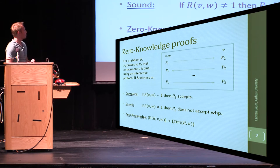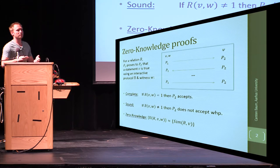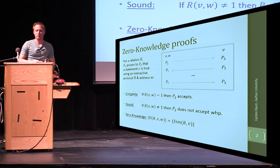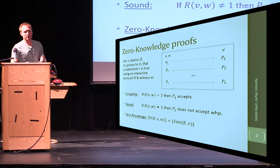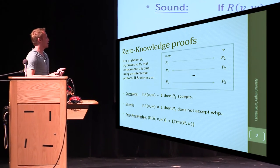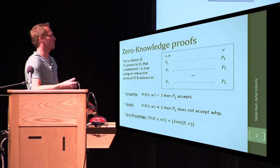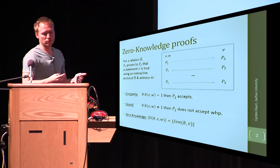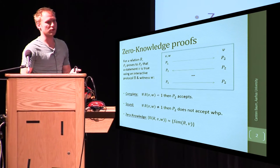And zero knowledge, meaning that you can simulate a proper protocol transcript only having the relation and the statement, and so being able to generate a sample from the distribution that is close to protocol transcripts without having the witness efficiently.